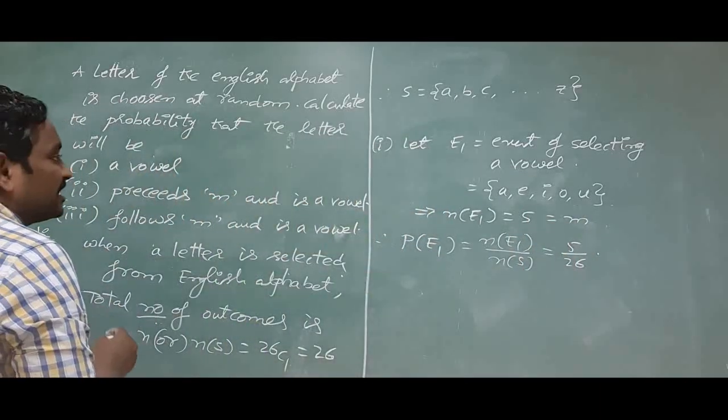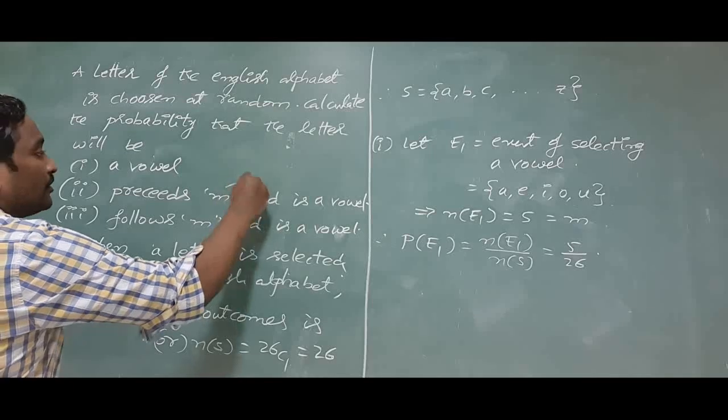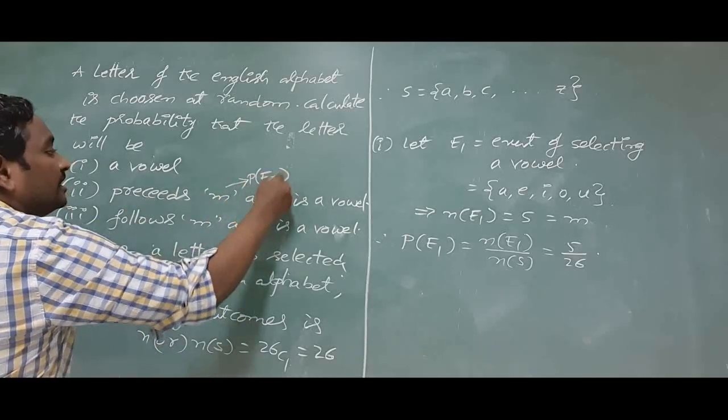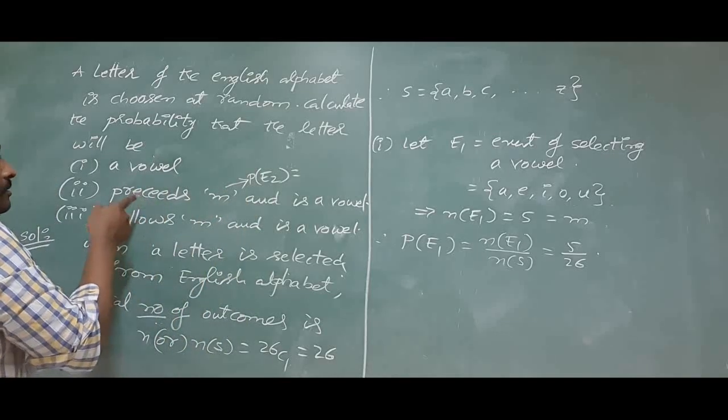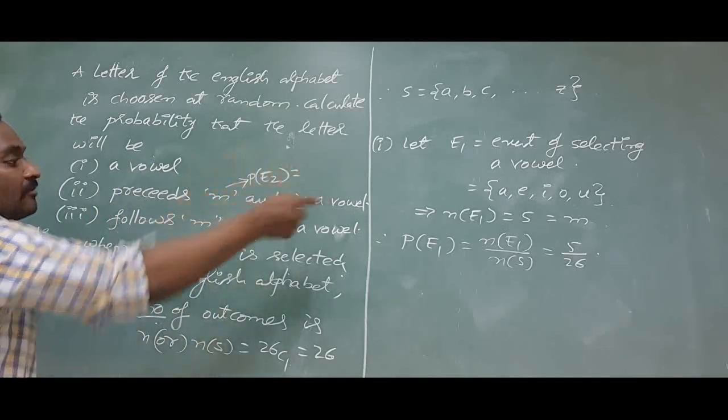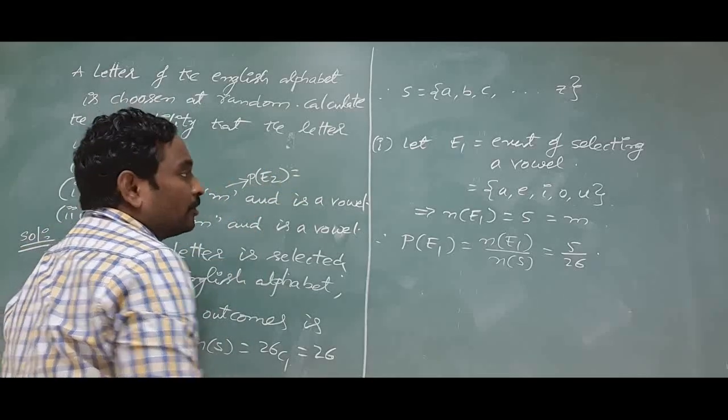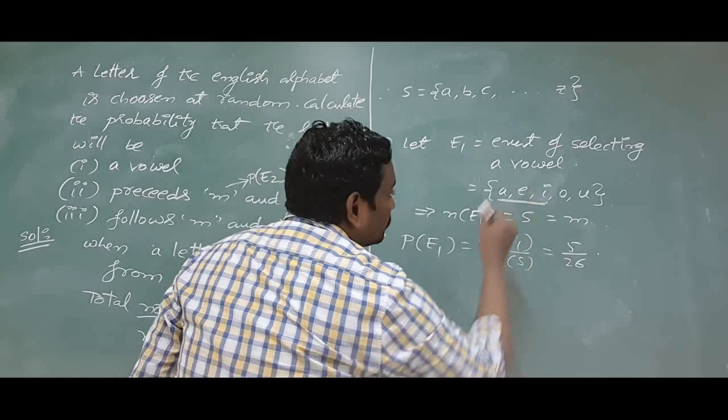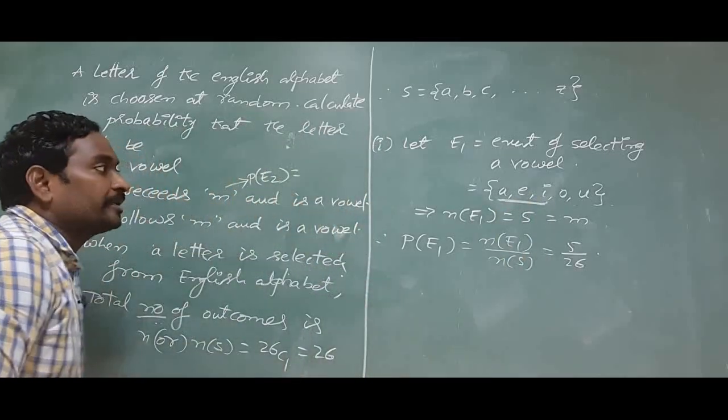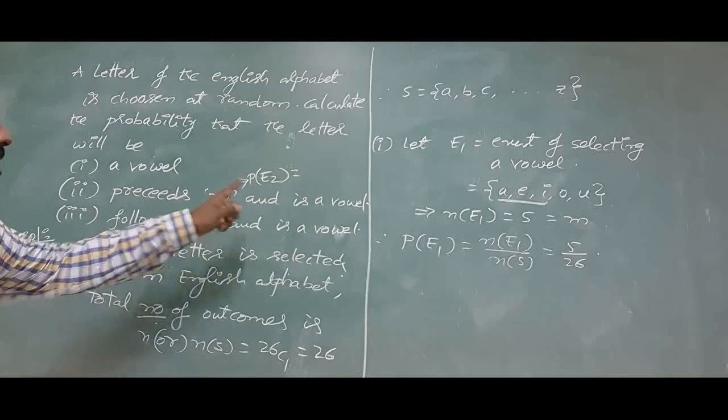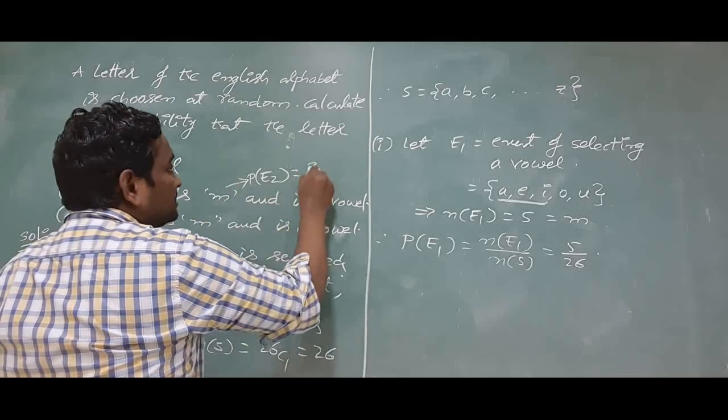Similarly, see the second one directly I will write here. You can take this event as E2. What is the probability of E2? To get a letter which precedes M and it is a vowel. You know only three letters are there. Three letters precede M and are vowels, that is why it is 3 by 26.